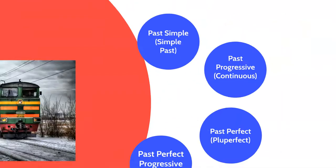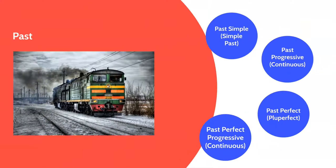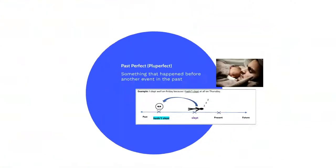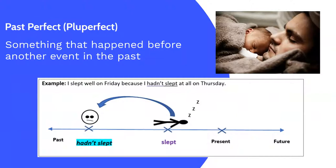The next tense is the past perfect, sometimes called the pluperfect tense. The past perfect tense is for something that happened before another event in the past. For example, I slept well on Friday because I hadn't slept at all on Thursday. The event in the past is slept, but the event before that is hadn't slept, and that's why it's in the past perfect tense.